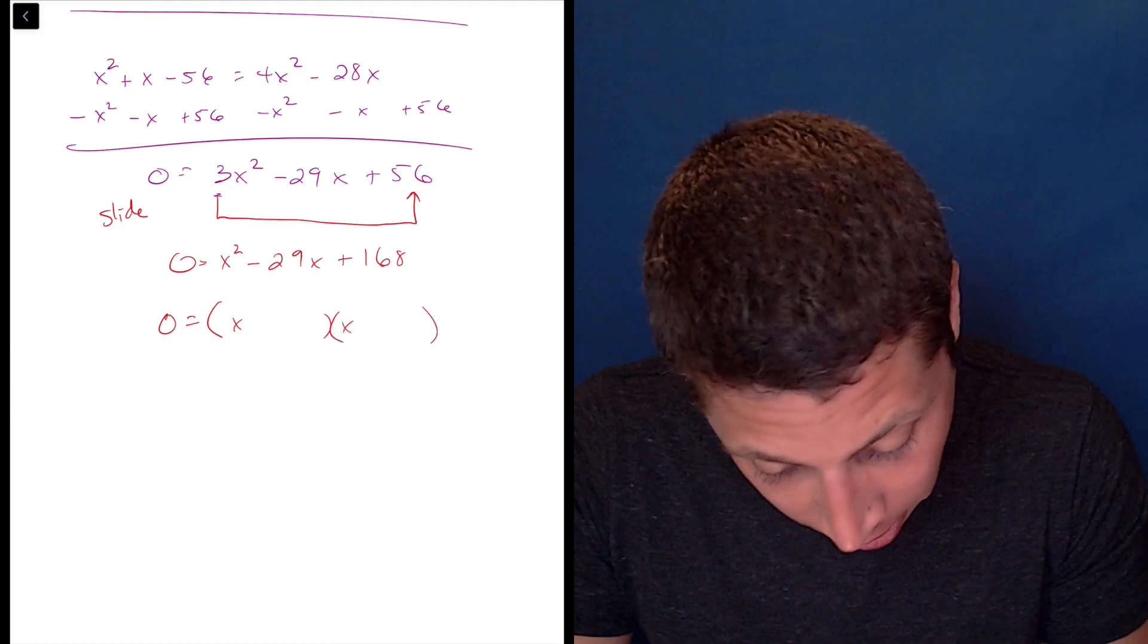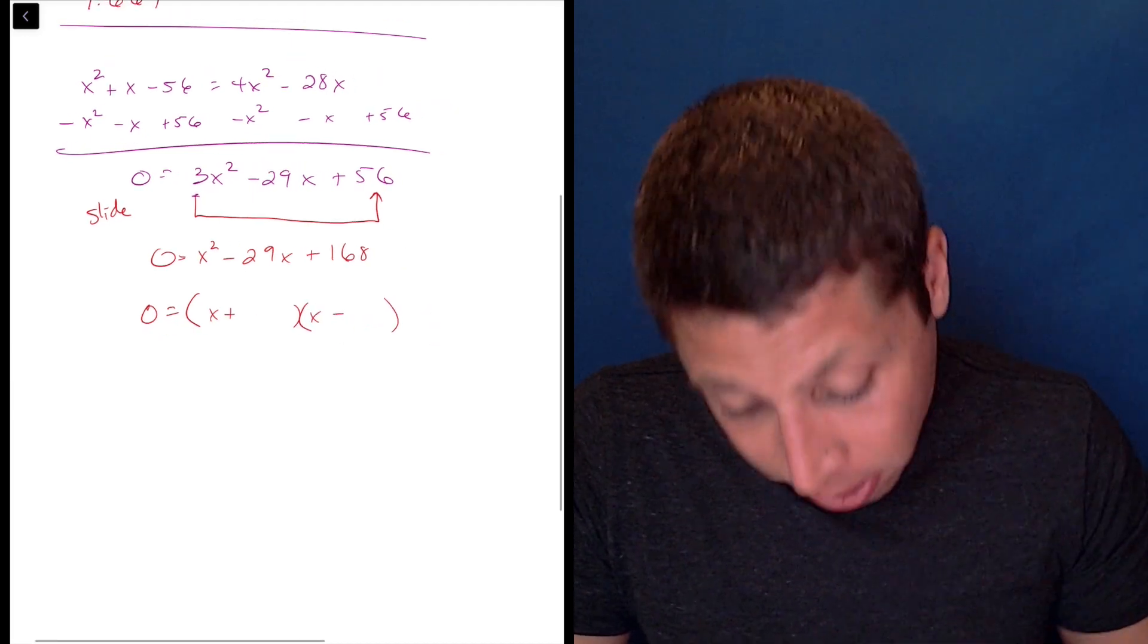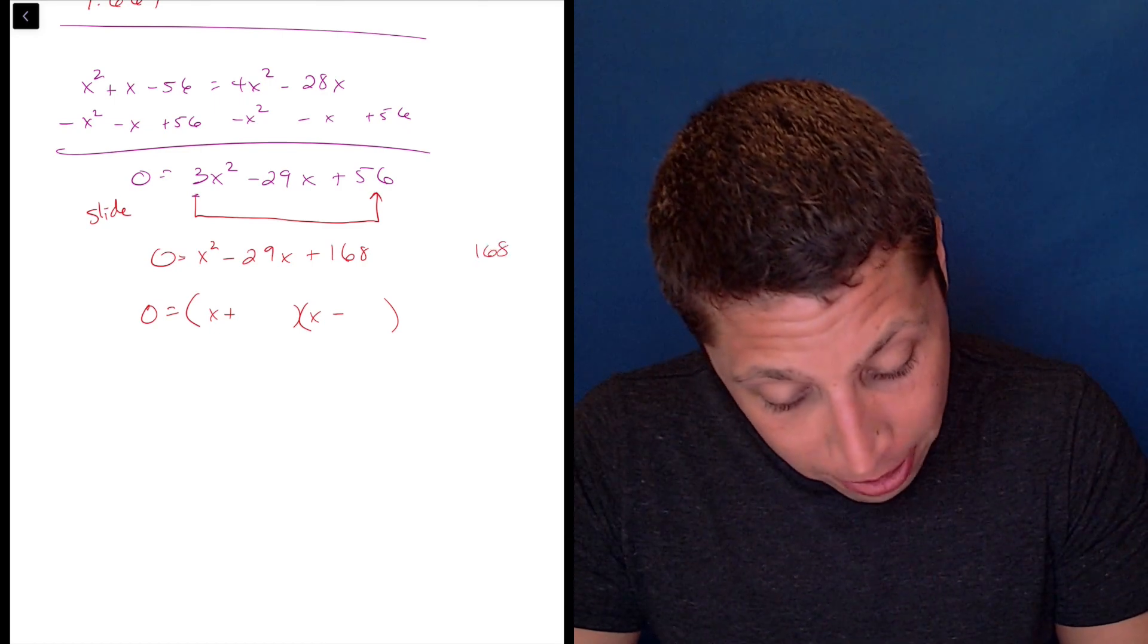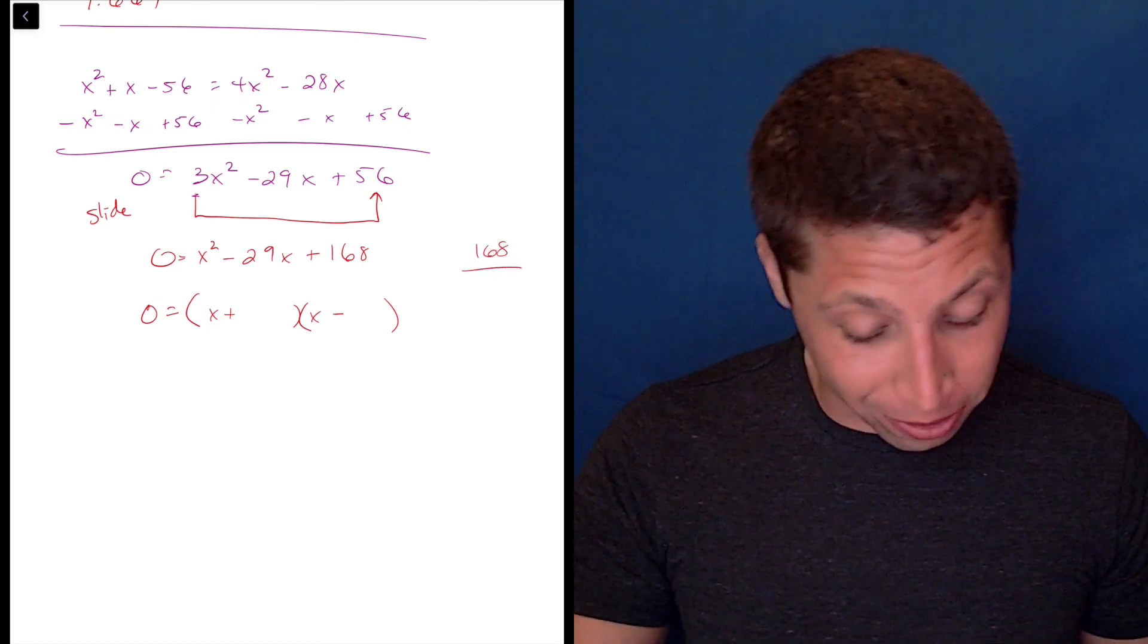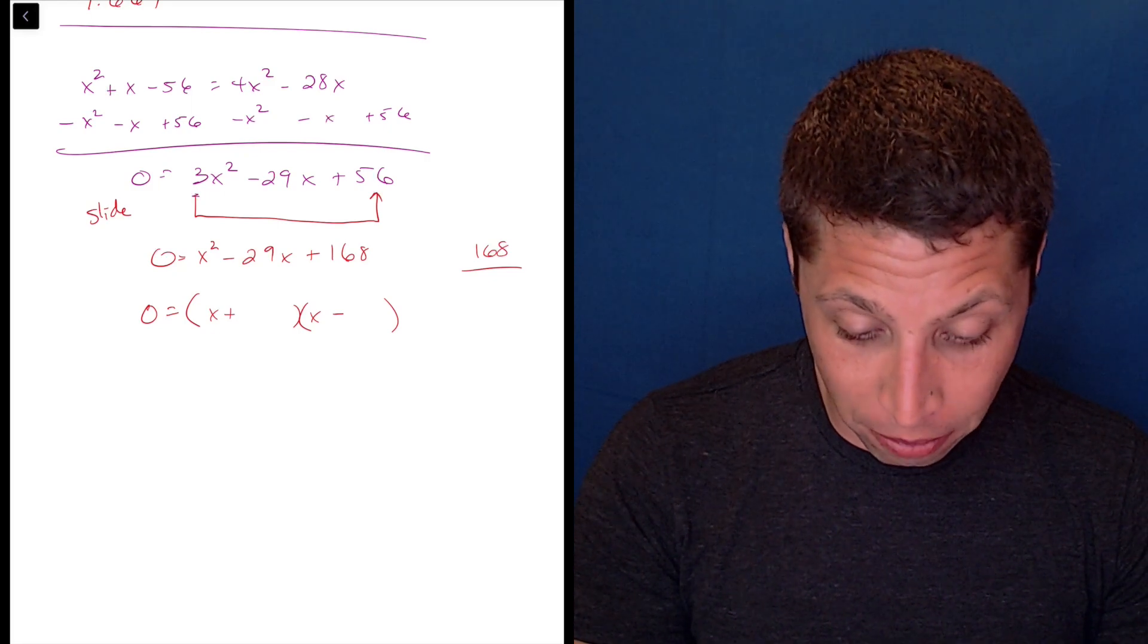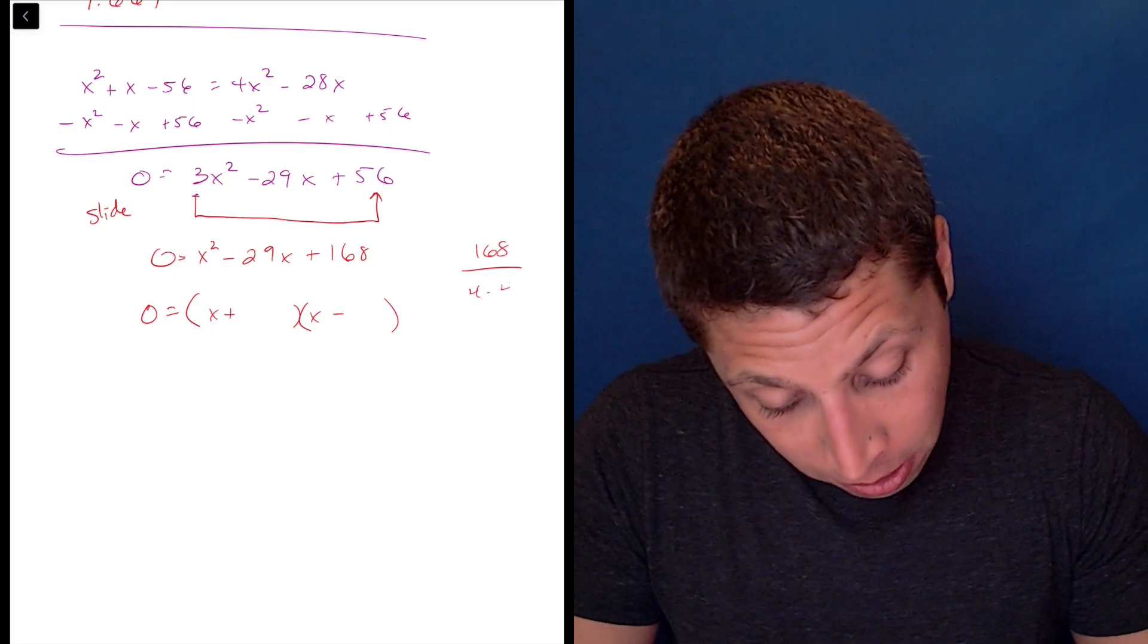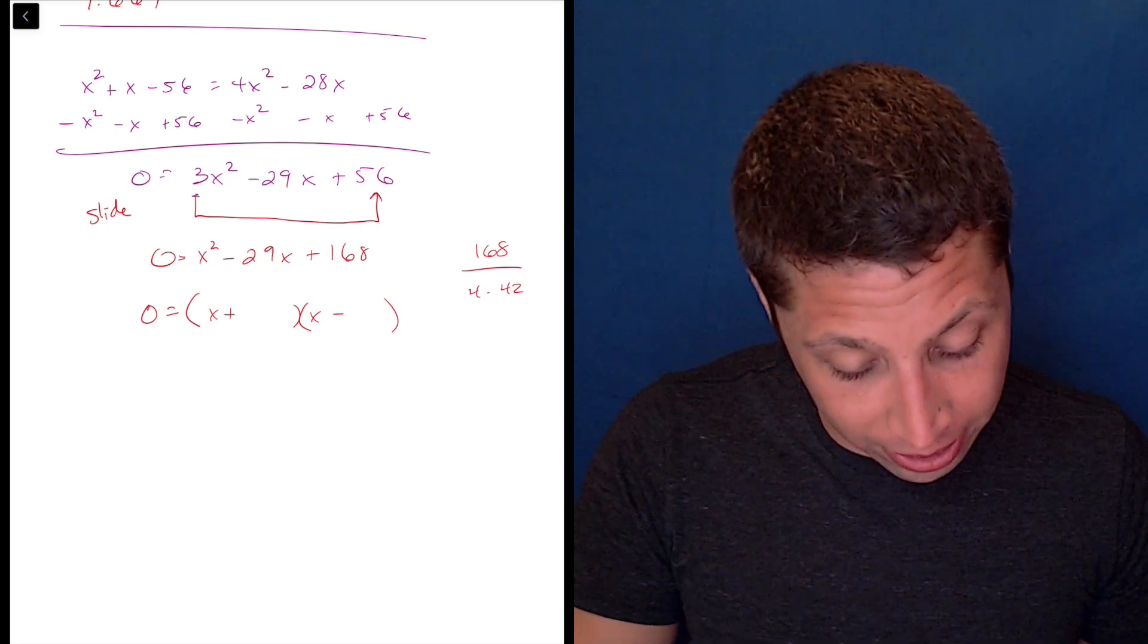This is so annoying. It's going to be a plus and a minus. I don't know what multiplies to 168. Does anybody? Alright. But whatever they are, it's going to be a pretty big difference of 29. Let's do maybe 168 divided by 4, 42, 4 times 42, and that's not going to get me 29.